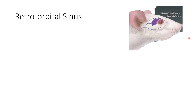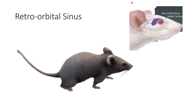The first method is the retroorbital sinus. In this diagram you can see the purple portion — it is the retroorbital sinus, present behind the eye. We hold the animal's neck in such a way that the eye is made to bulge. Then with the help of a capillary tube, we insert it medially, laterally, or dorsally, and the blood is allowed to flow by capillary action.